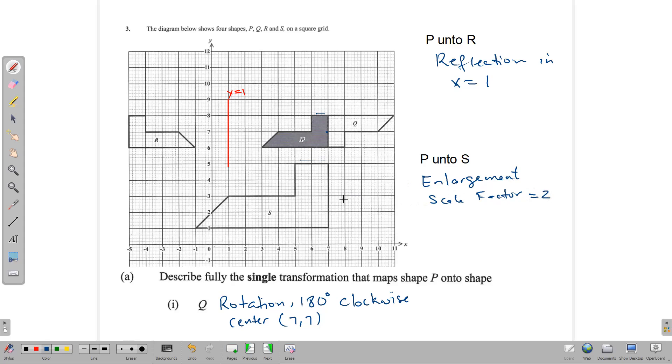We can even go further and state the center of the enlargement. To find it, we connect two corresponding sides of the shape. Let's start with this point here and that point. Draw a straight line through them, really long, like that. Then we connect another set of points. So here's this one and this one. We connect those two and see they intersect at this point here, right here. That tells us this is where the center of the enlargement is. So it has a center of 7, 11. We have fully described the transformations that moved P around the graph.